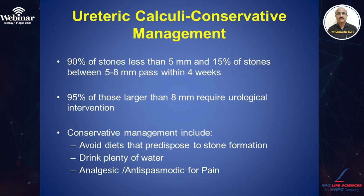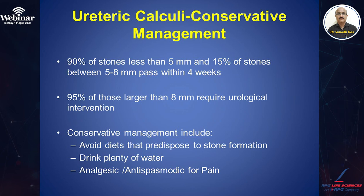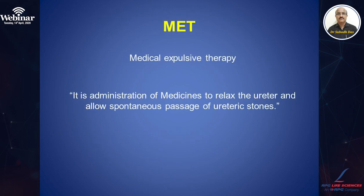Where is the scope of conservative management? 90 percent of stones less than 5 mm and 15 percent of stones between 5 and 8 mm pass within 4 weeks. 95 percent of those larger than 8 mm require urological intervention — so basically stones more than 8 mm will require intervention and will not respond to medical treatment. Conservative management includes avoidance of diets that predispose to stone formation, drinking plenty of water, and analgesics and antispasmodics for pain. Medical expulsion therapy is the administration of medicines to relax the ureter and allow spontaneous passage of ureteric stones.